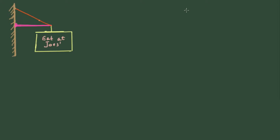Hello everybody, I'm Alex Rojas and welcome back to my YouTube channel. Today is going to be about a very famous homework problem: the owner of a business wants to advertise it by hanging outside a sign, and the sign is going to be supported only by a rigid horizontal bar and a diagonal cable.